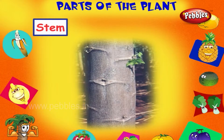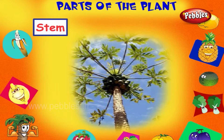This is the stem. It helps the plant to stand at a place. They transport water from the roots to the leaves and food from leaves to the roots.